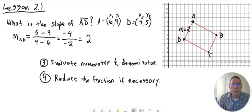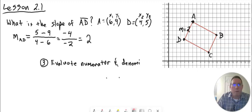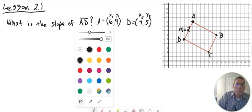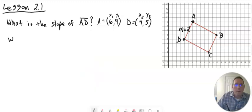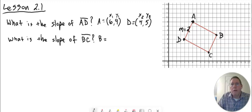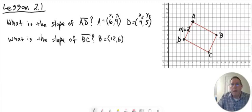Now let's do a couple more. Let's find the slope of another line segment — line segment BC. The first thing we want to do is identify the coordinates of B and C. B is at 12, 6. The coordinates of C are 10 and 2.